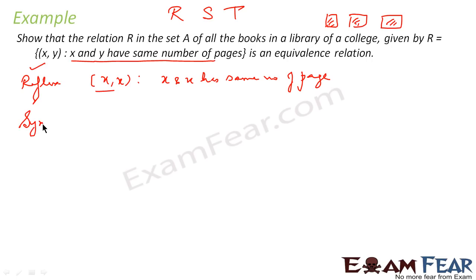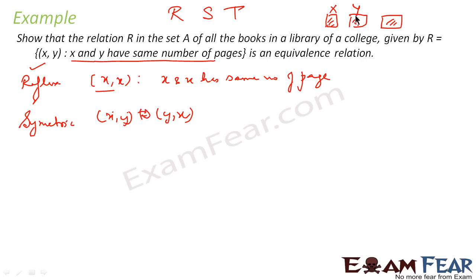For symmetric: if (X, Y) exists — meaning X and Y have the same number of pages — then (Y, X) must also exist, meaning Y and X have the same number of pages. That is the same statement in different order, so it is symmetric.